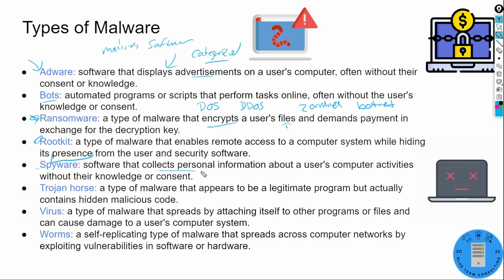Spyware — collecting personal information without the user's consent. A Trojan horse — it seems legitimate, but it's actually malicious. Back in Roman days, the Trojan horse was like a gift, but inside all of the army members were hidden, ready to attack once let in. That is a Trojan horse.